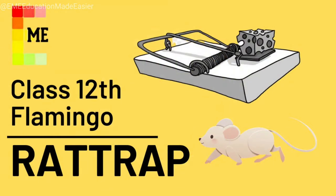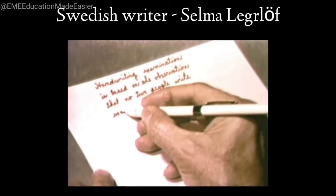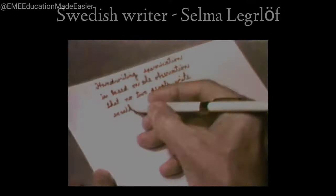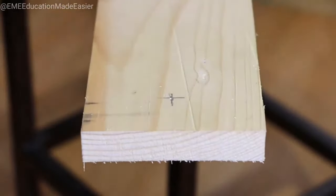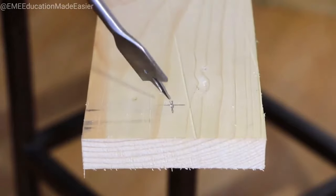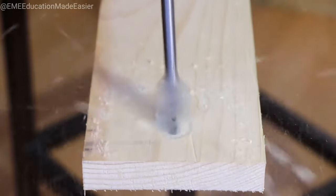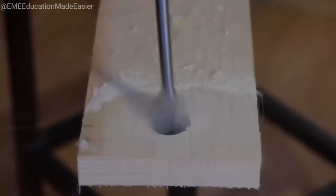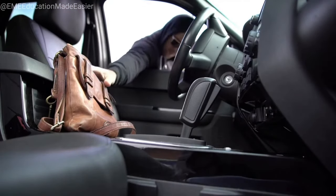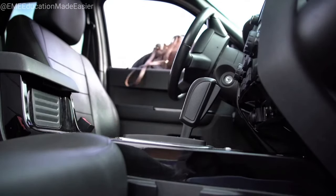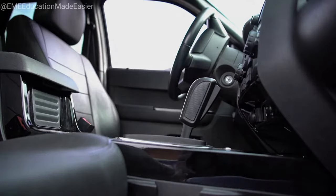Today I am here with the chapter 'The Rattrap,' taken from the Flamingo Book of Class 12th. This story has been written by Swedish writer Selma Lagerlöf. It is about a poor wanderer who made his living by selling rat traps made out of begged materials. He also took to petty stealing at times as selling rat traps alone was not enough to sustain him. When lonely, a somber thought often crossed his mind that all the comforts of life were nothing but bait set to trap human beings — thus he found the world similar to a rat trap where men and women succumbed to temptation.